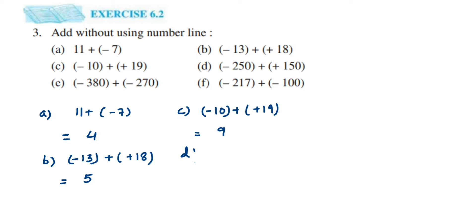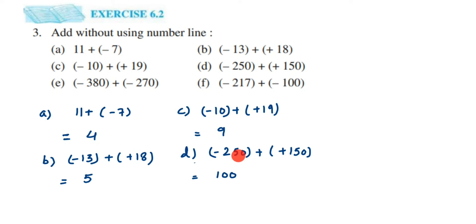The next one is minus 250 plus plus 150. Both integers have different signs, so subtract: 250 minus 150 equals 100. Which number is greater — 250 or 150? It's 250, and the sign of 250 is negative, so you put a minus sign here. The answer is minus 100.